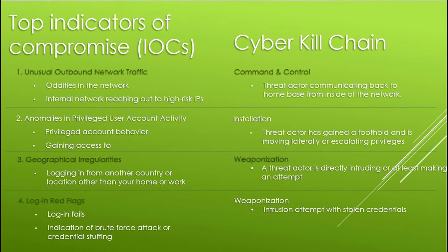Now let's dive in and talk about some common IOCs applied to what we've learned. First: unusual outbound network traffic. While inbound traffic is typically most monitored, outbound traffic can indicate the first signs of an intrusion. This involves anomalies within a network — for example, the internal network reaching out to an IP in Russia to send out packets, or a consistent connection to a malicious IP that ends up being a C2. This could fall under both the C2 step and actions on objectives as exfiltration.